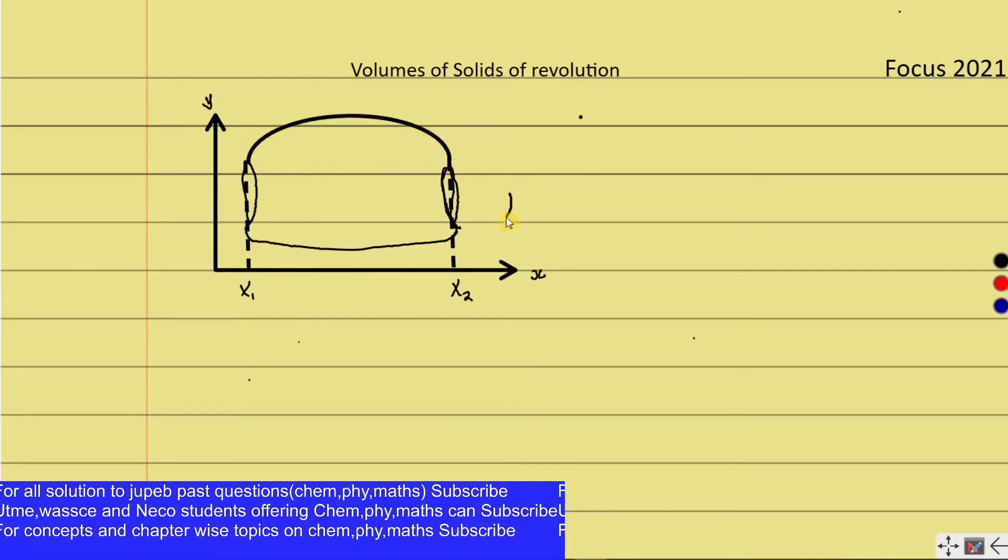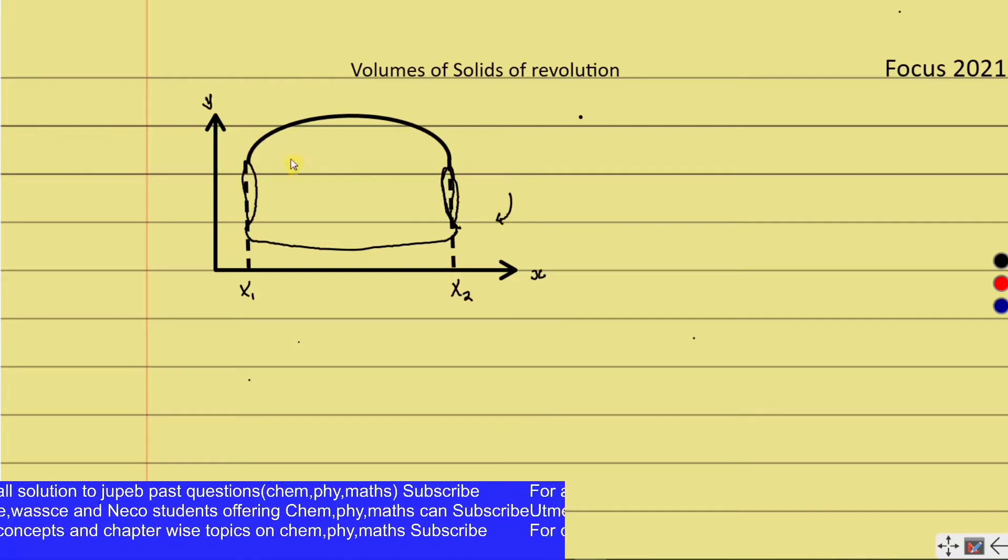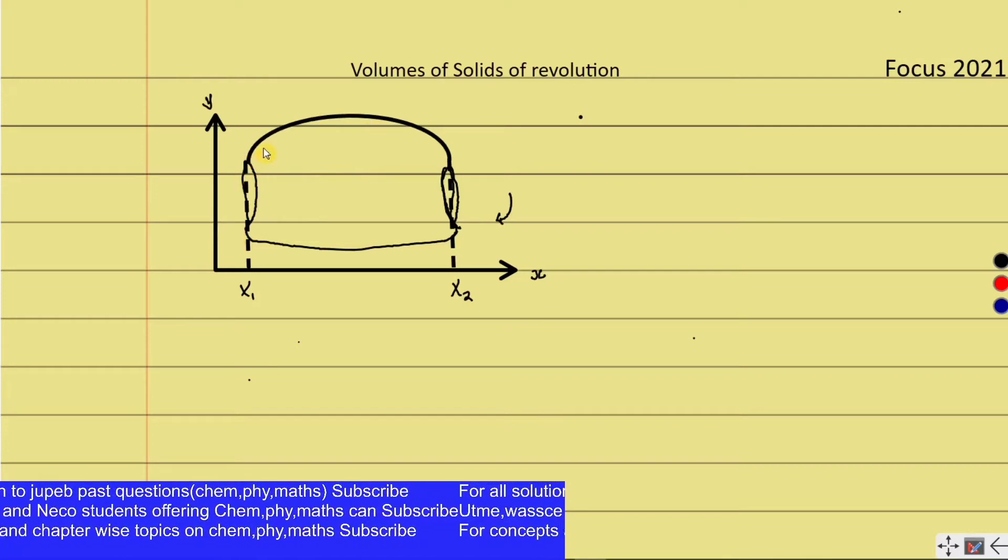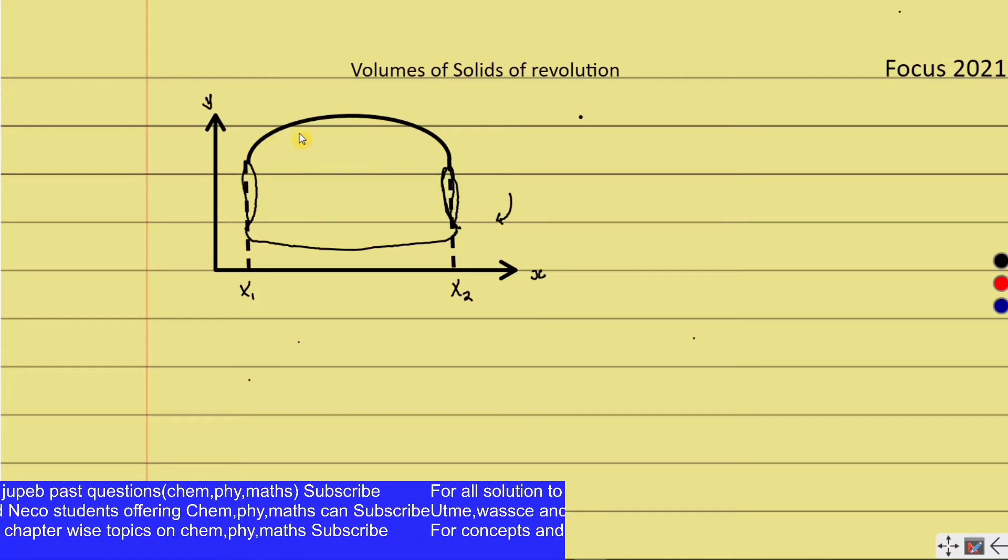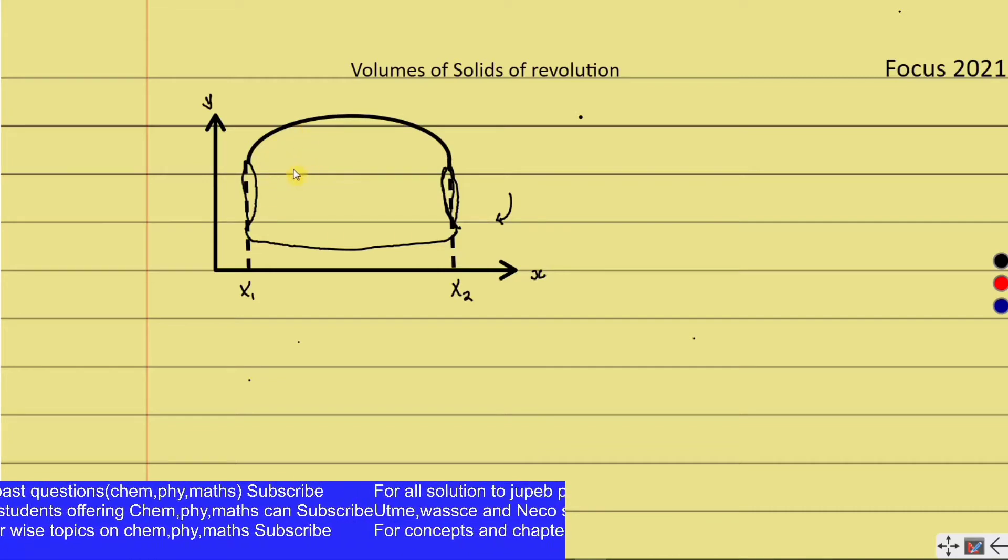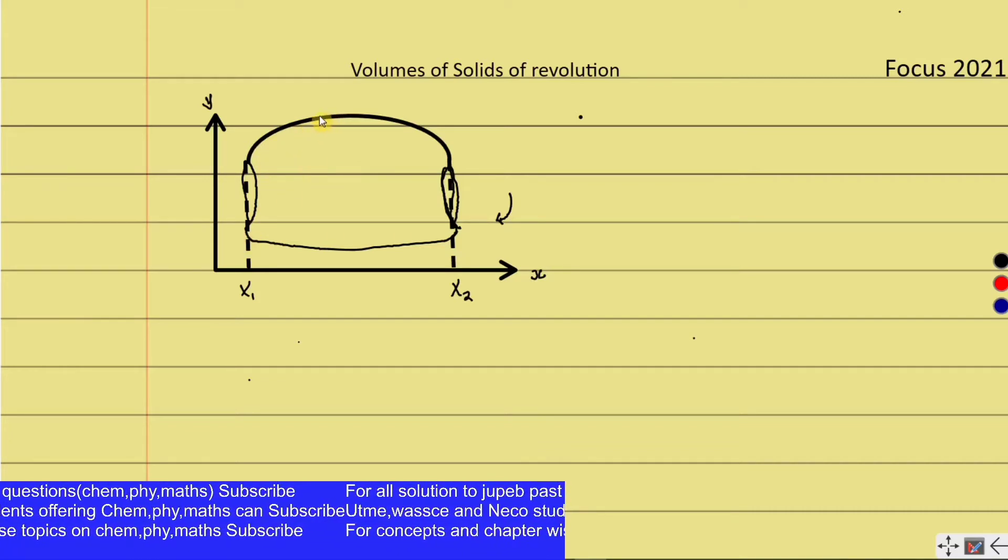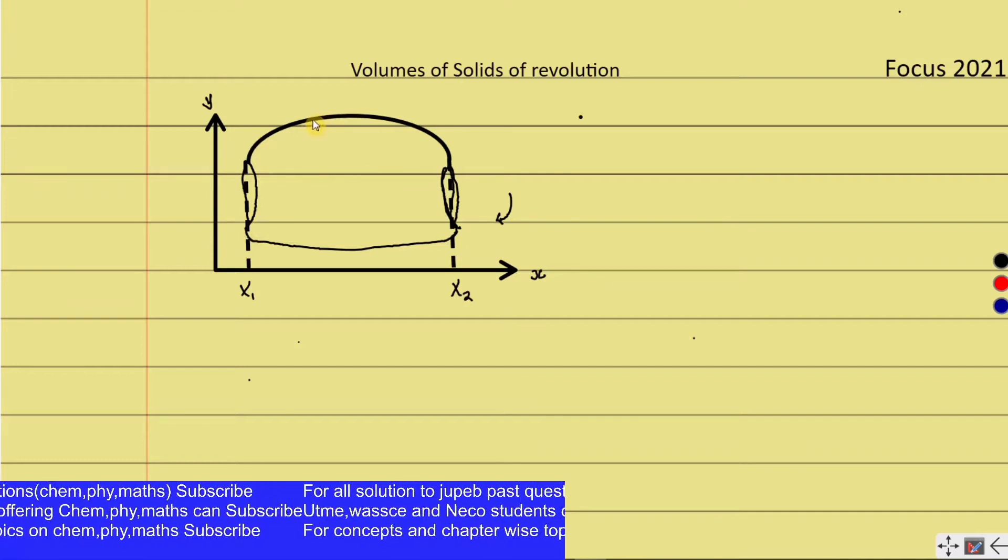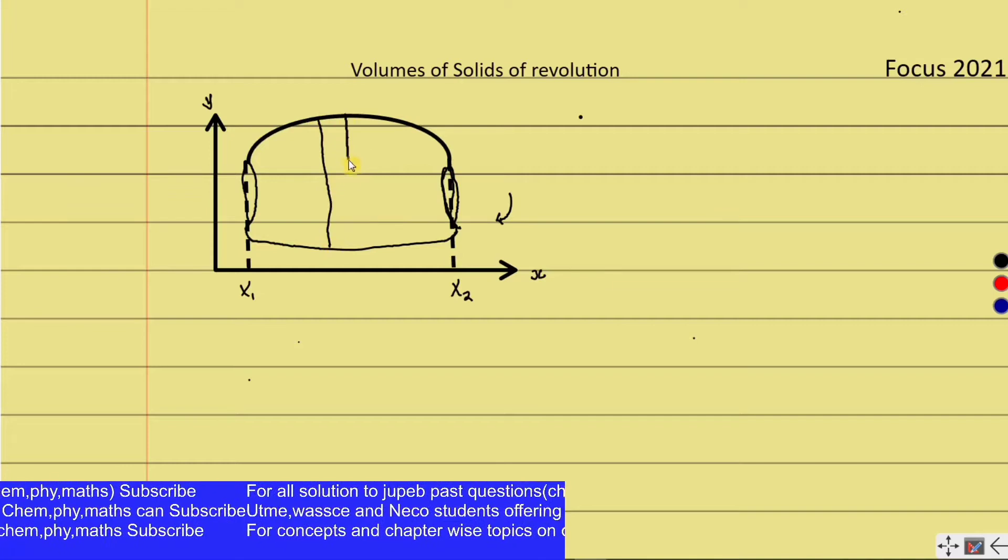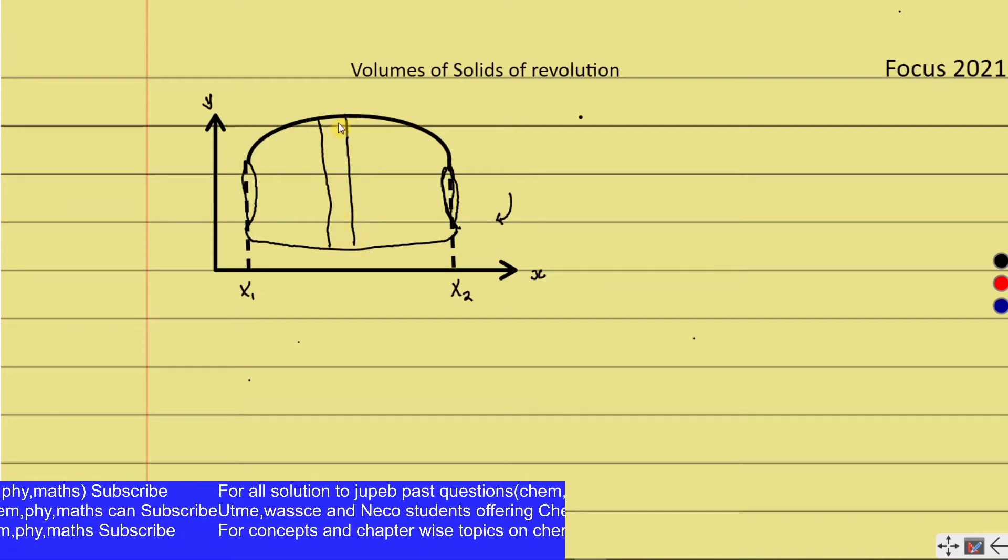If you look at this shape, it is very difficult to pick out the type of shape it is. Because of that, we take a very small part inside the shape as we have already studied before, and we take that elemental shape.